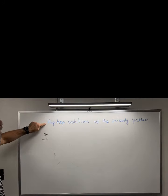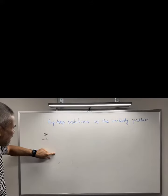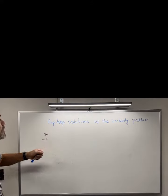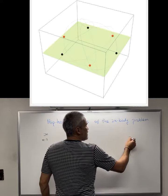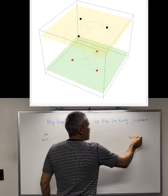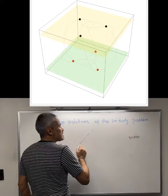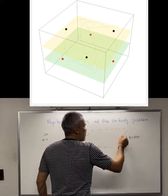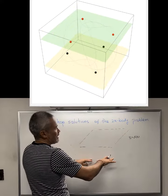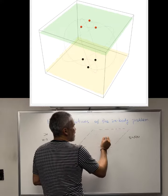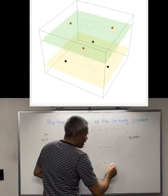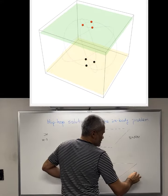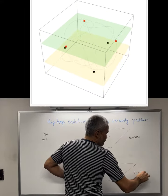Hip-hop solutions of the 2n-body problem are a generalization of these solutions. For these solutions, at every t, half of the bodies are in a plane parallel to the xy plane, and the other half are at the plane z equals negative d of t.